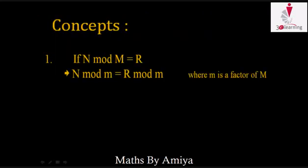Concept number one: in terms of numbers, when a number is divided by a divisor and we have remainder R, when the same number is divided by a factor of the old divisor, then the required remainder is the old remainder divided by the new divisor. The condition is: the new divisor should be a factor of the old one.